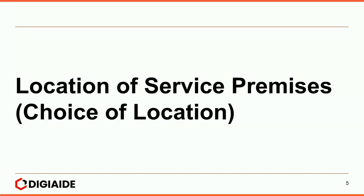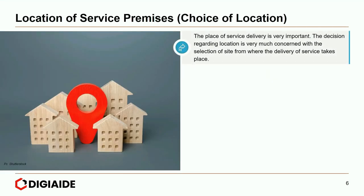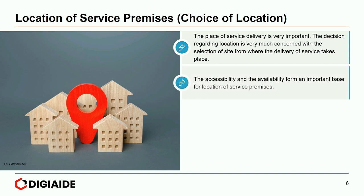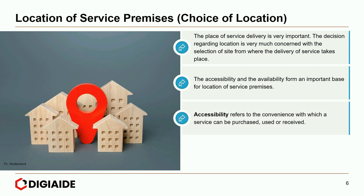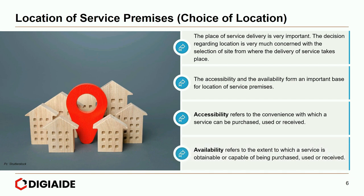In services, distribution means provision of personal services and information to the customer which adds value to the service. Services must be available at the right time and the right place, accessible with care and convenience. Moving on to the location of service premises, the place of service delivery is very important. The decision regarding location is concerned with the selection of site from where the delivery of service takes place. The accessibility and availability form an important base for location of service premises. Accessibility refers to the convenience with which a service can be purchased, used or received. Availability refers to the extent to which a service is obtainable or capable of being purchased, used or received.